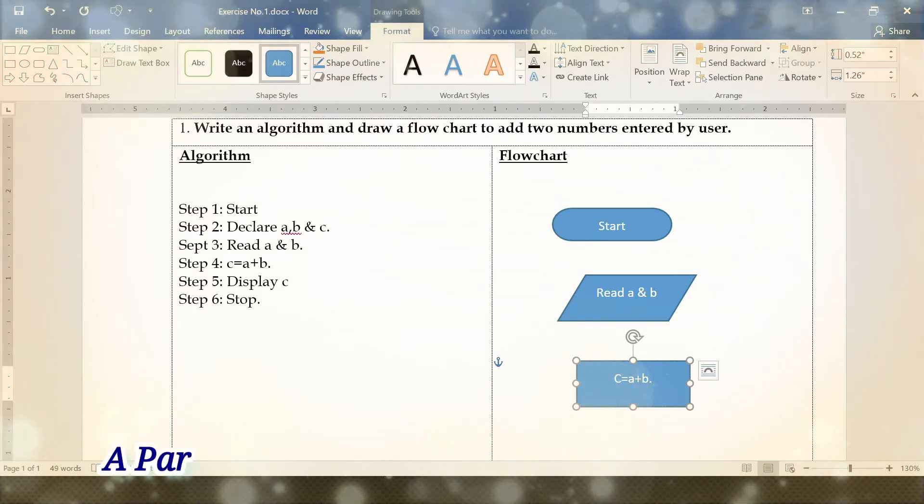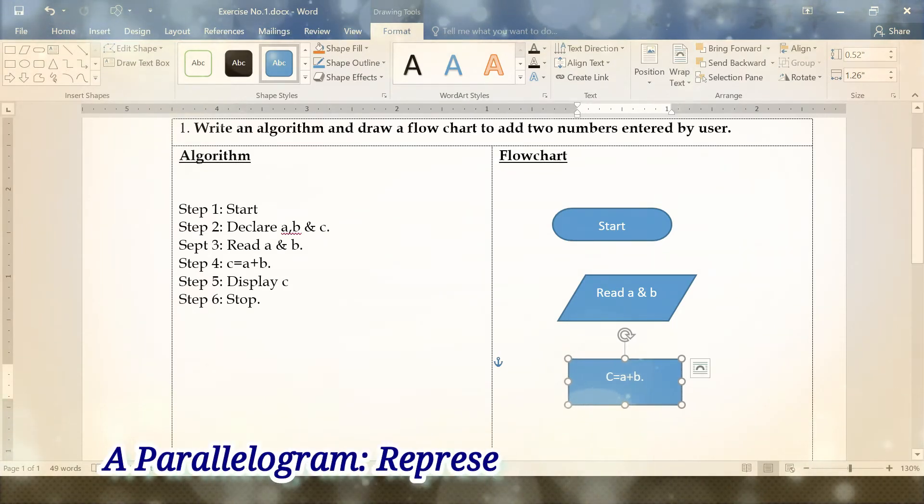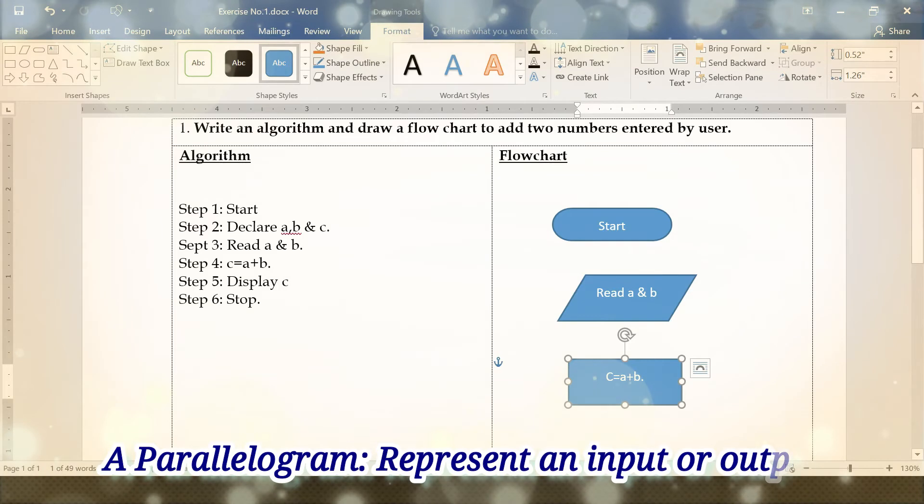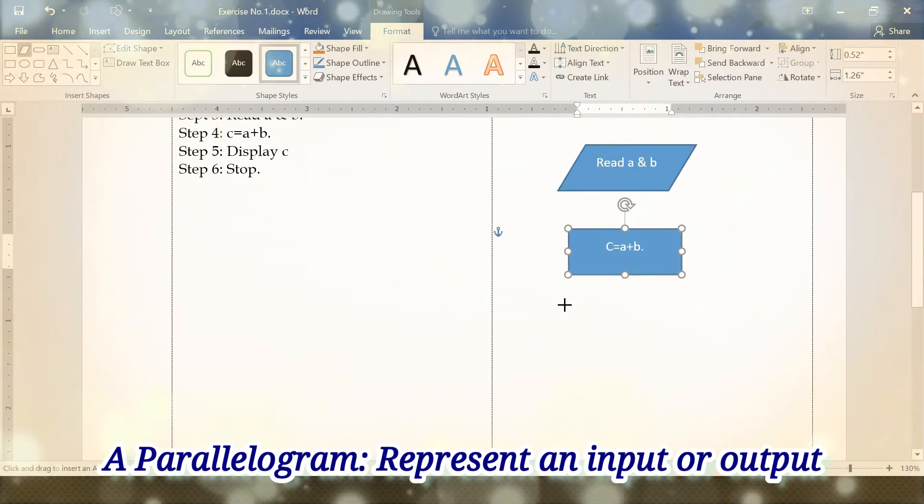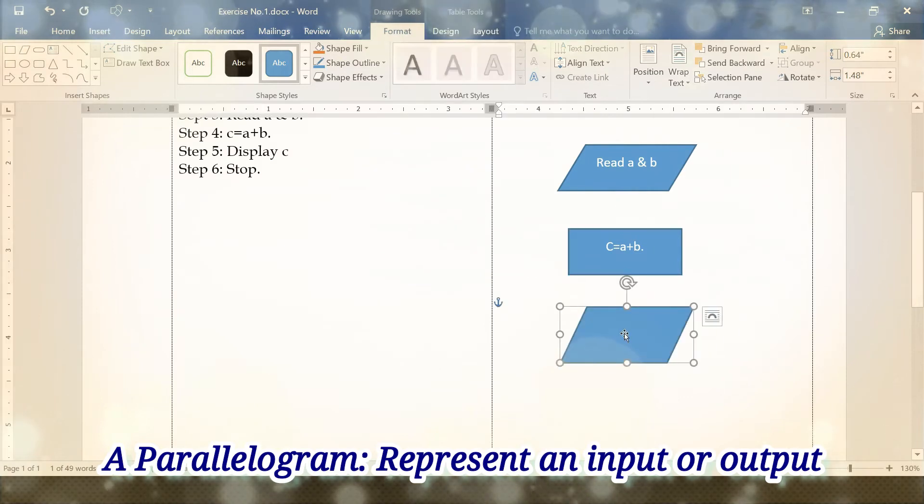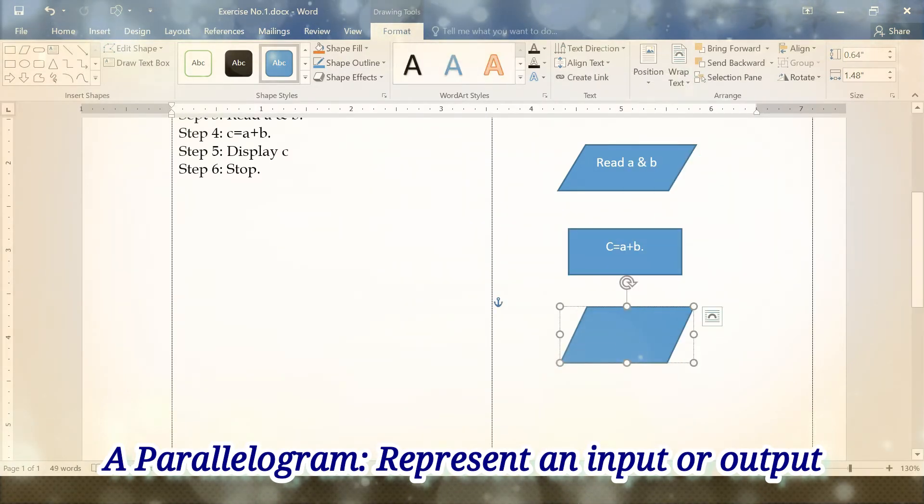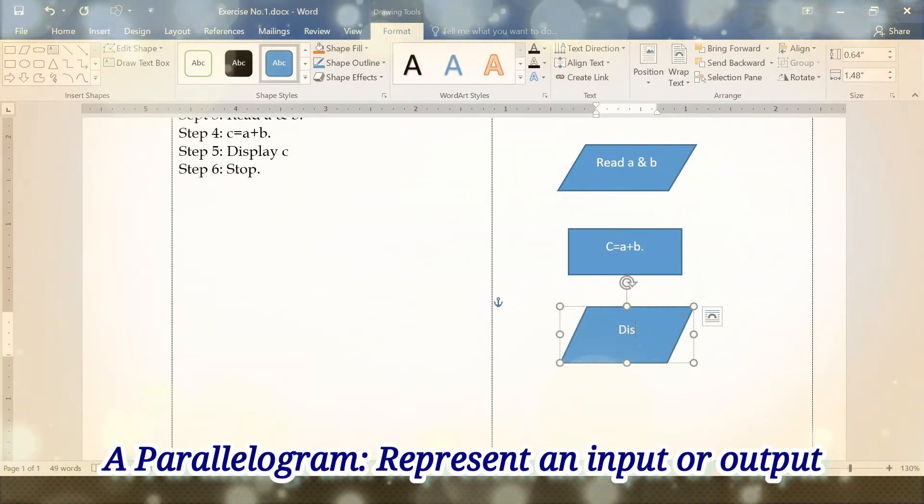And then what is step five? Display. For input and output we want to use the parallelogram. Going for shapes, going for parallelogram. Right click, add text, display c.